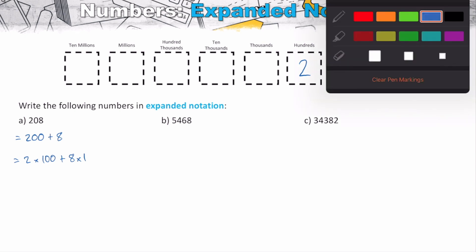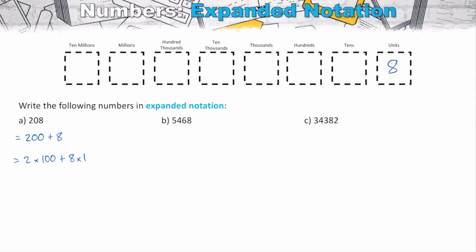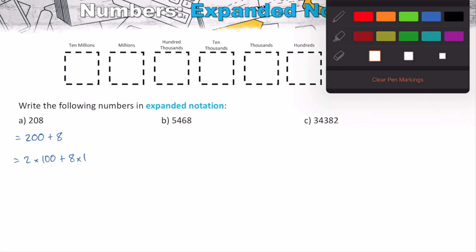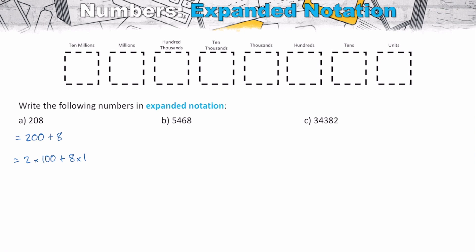So let's work through these other couple of problems here. We've got this 5468. Now, if you're not 100% sure where the digits go, just start at the other end. So we've got 8, 6, 4, 5. And now we want to break down its parts. This one has four parts to it. It's got five thousands, four hundreds, six tens, and eight units.